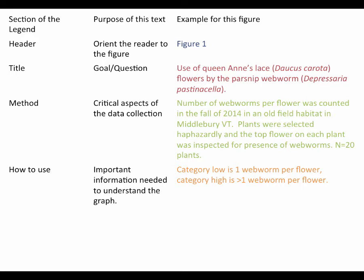One piece of information you need to understand about numbering is that you number the figures after you write the text. So the first figure that you talk about in the text gets the number Figure 1. It may be the last figure that you draw, but it's still Figure 1 because it's the first one you talk about.